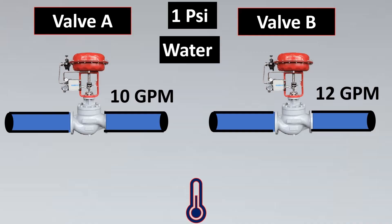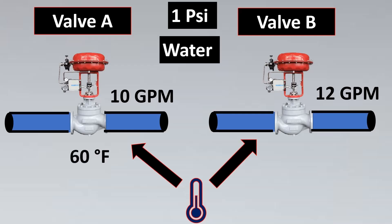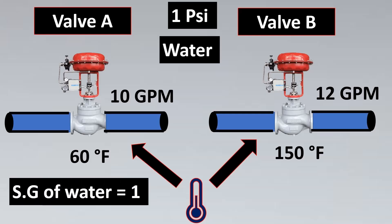That parameter is temperature. Both valves using water might have different temperatures — one maybe at 60°F and the other at 150°F. As temperature increases there is again a difference in flow rate, so we have to maintain a constant temperature as well. We will select 60°F. A lot of people ask why 60°F is specifically taken in the CV definition — the answer is because the specific gravity of water is 1 at 60°F, which helps greatly when doing CV calculations.